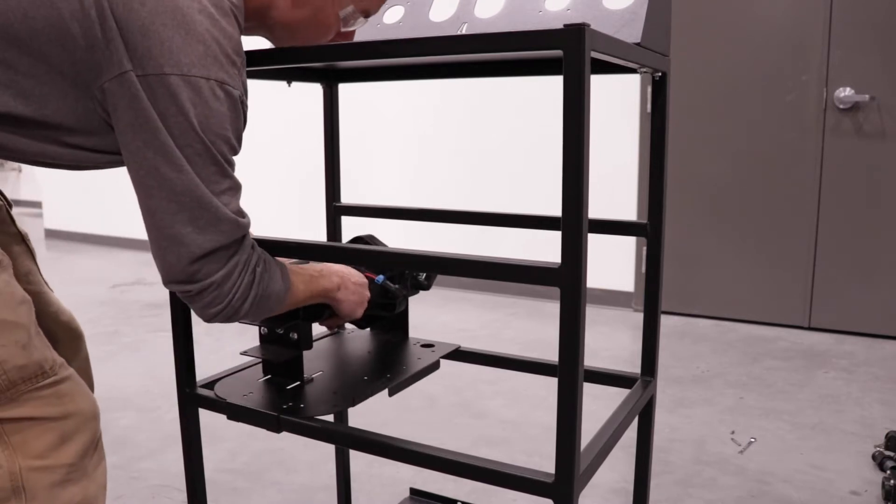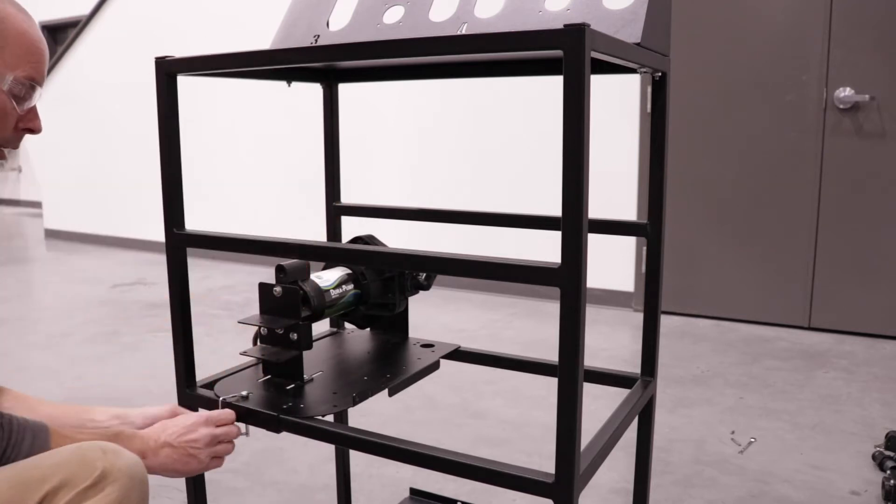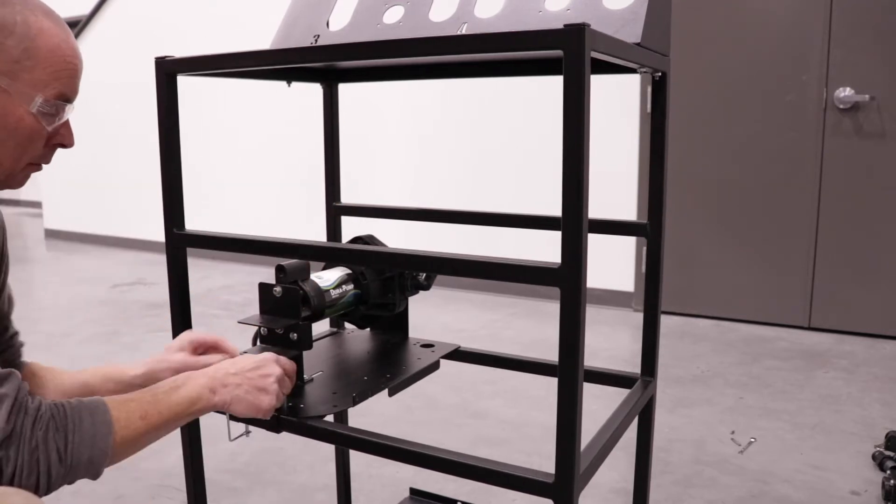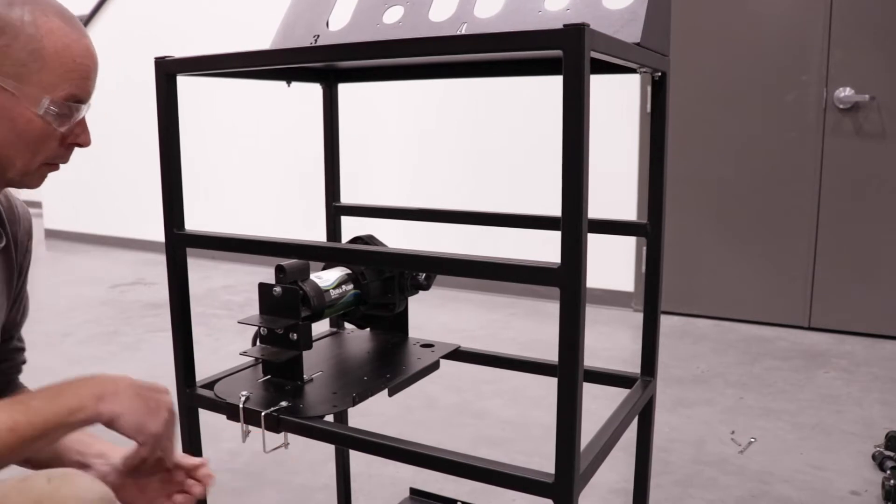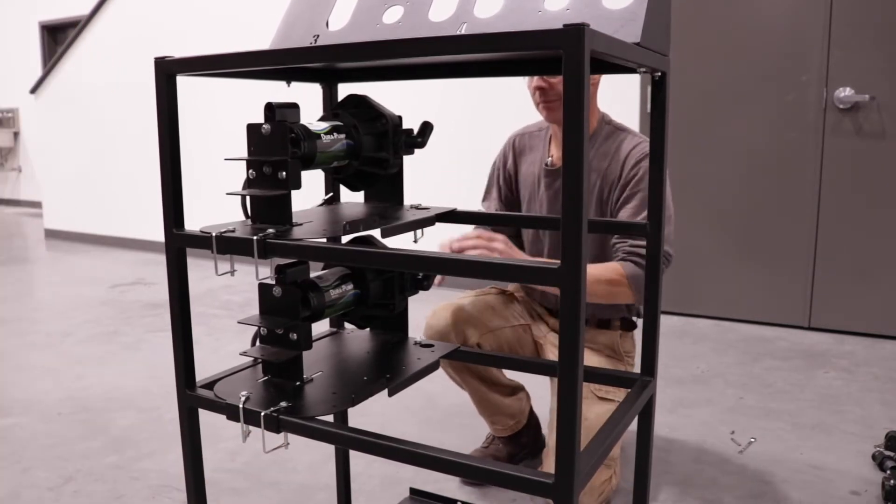Place EZ Caddy frame/pump onto DI frame. Secure with three snap pins, two at the motor end and one at the pump end. Repeat for pumps number two through number four.